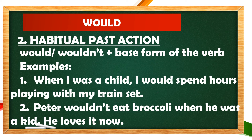Next is the modal 'would'. We use 'would' in expressing a habitual past action. The format is: would or would not plus the base form of the verb. Example: 'When I was a child, I would spend hours playing with my train set,' meaning the action happened in the past when the speaker was still a child. Number two: 'Peter would not eat broccoli when he was a kid. He loves it now.'